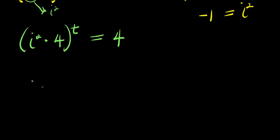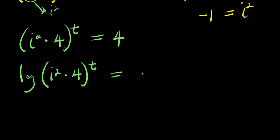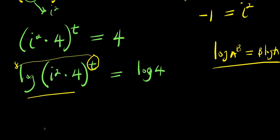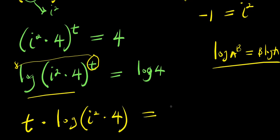The next thing we are going to do is make use of log. I take the log of i squared times 4 raised to the power of t, and I also take the log of 4. Now applying the logarithm power property — log of a to the power b equals b times log a — the t will come in front, so I'm going to have t times log of (i squared times 4) equals log 4.